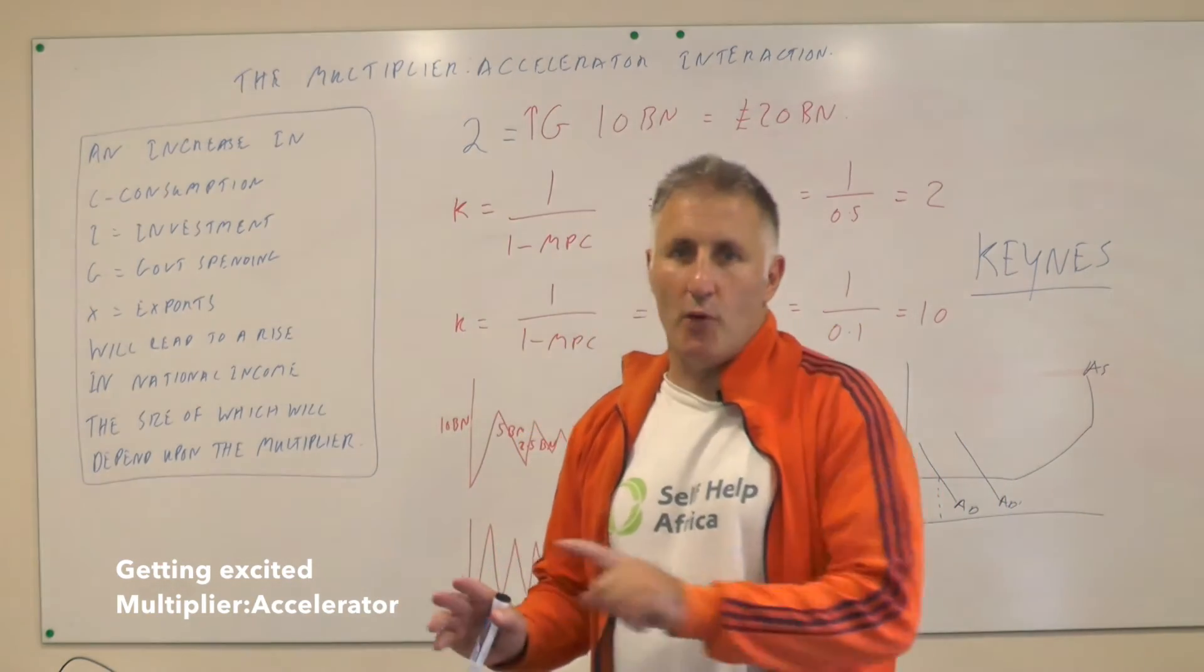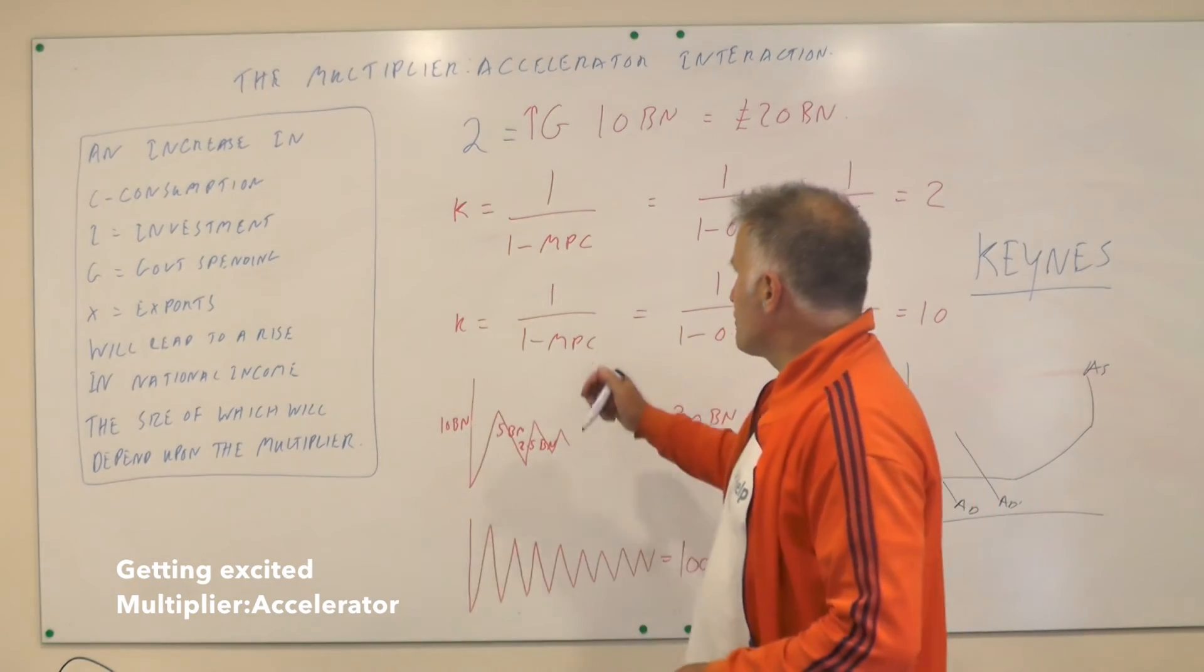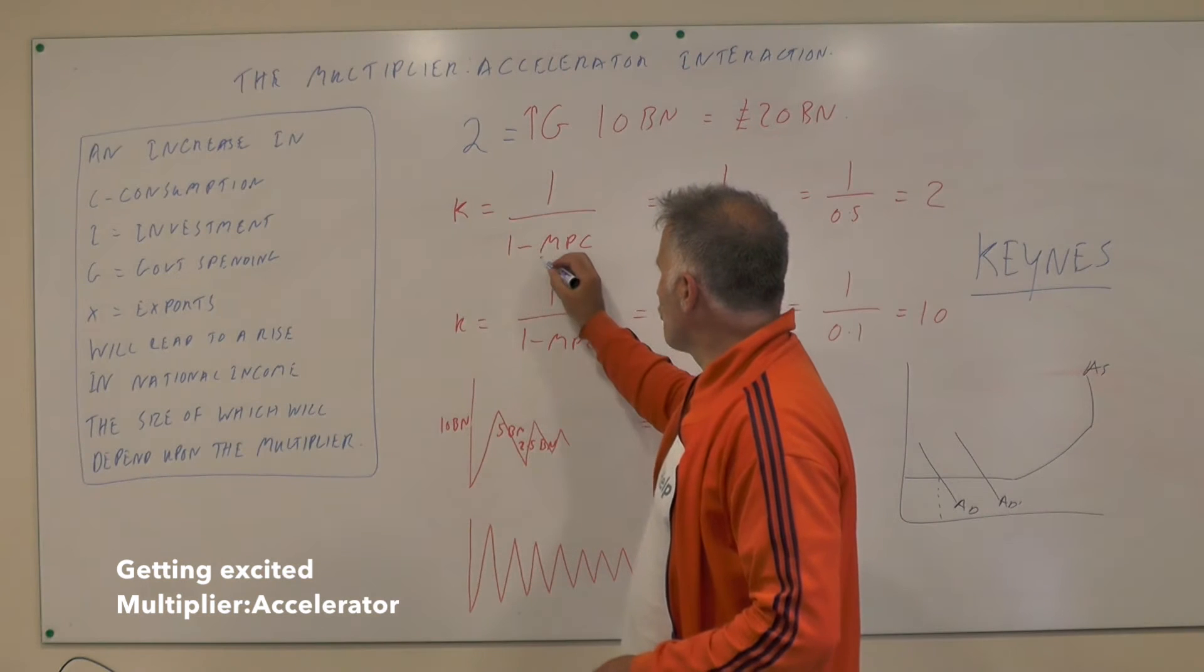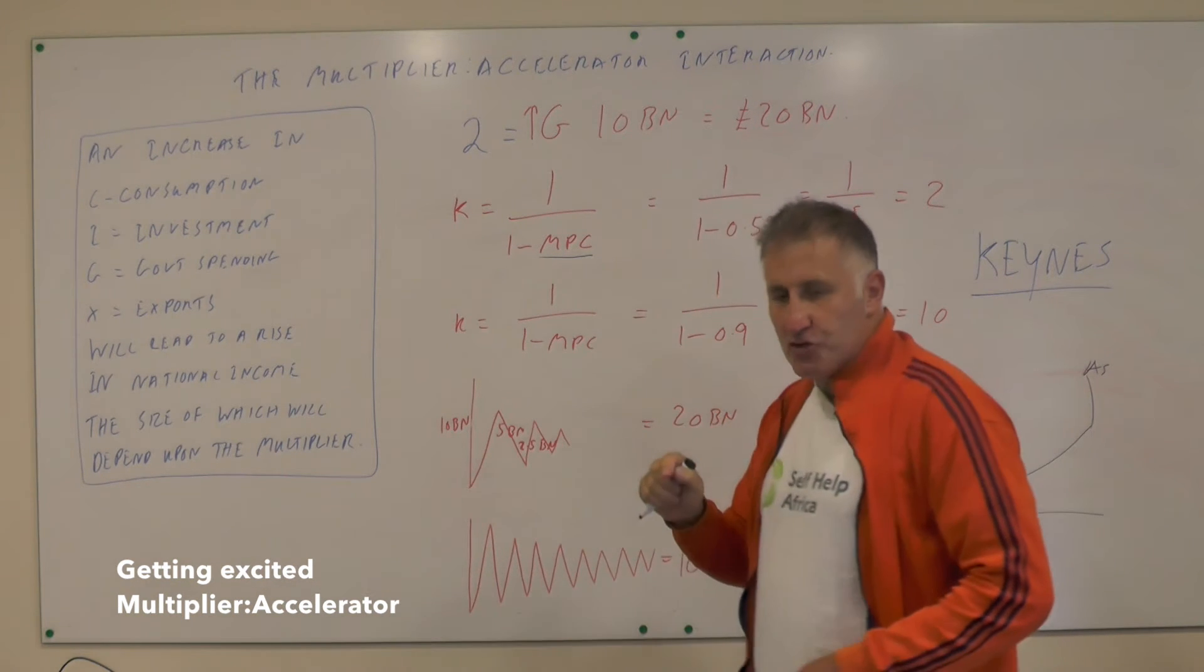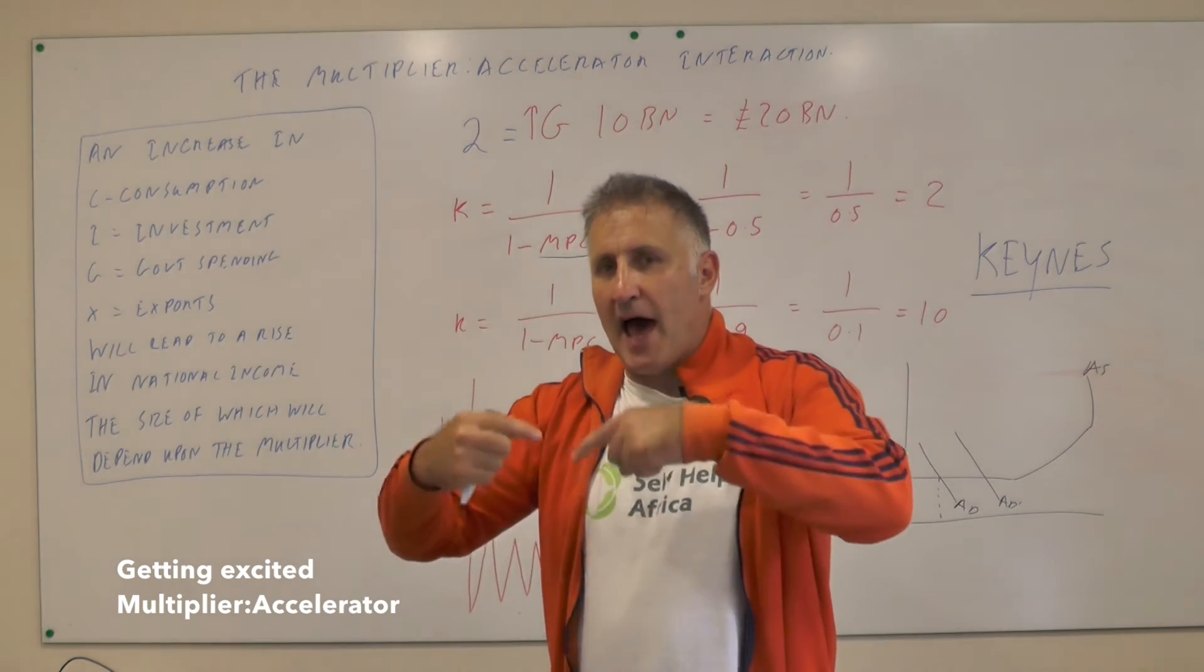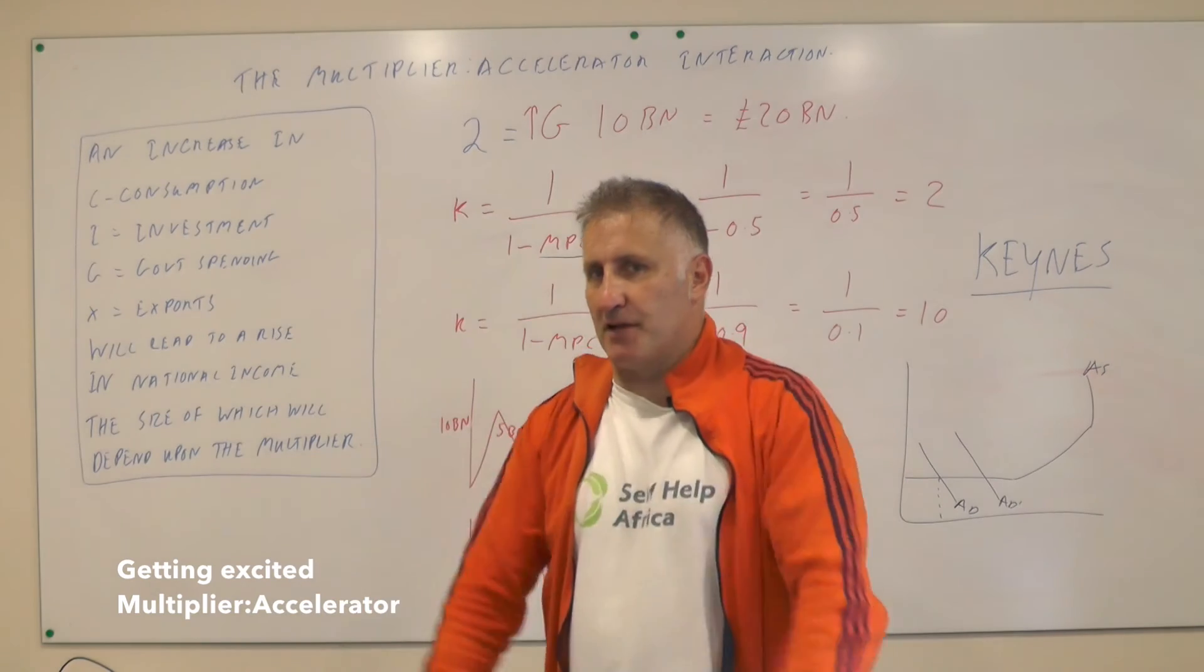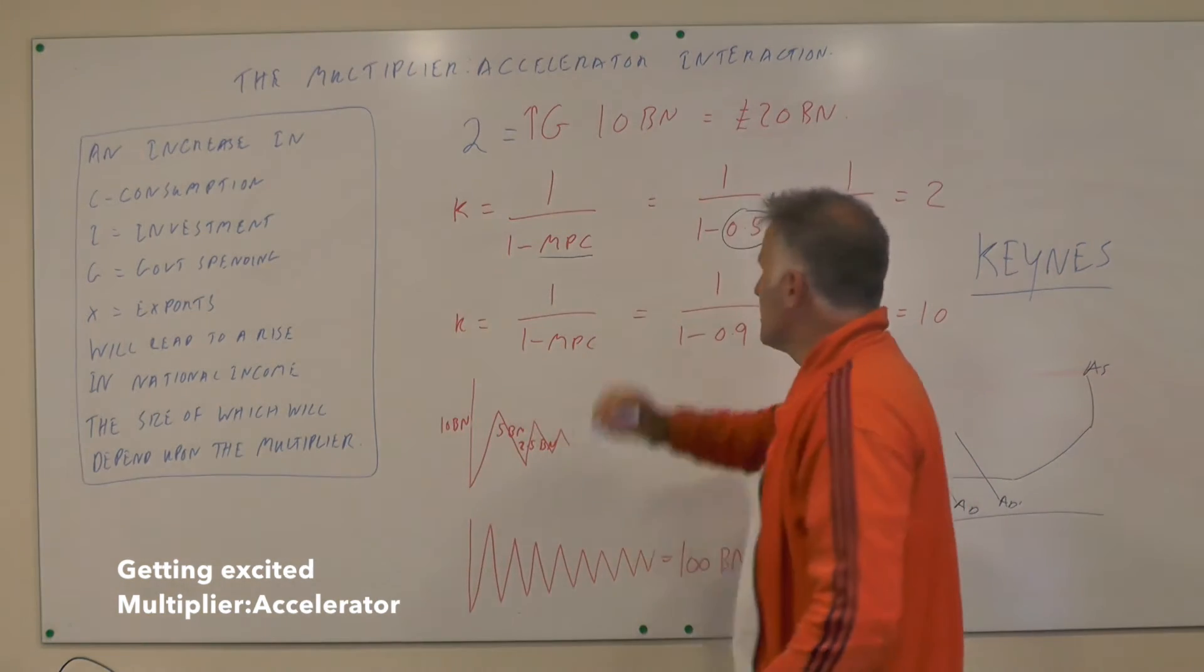If we're talking about a really simple economy with no imports and no taxes, then the following thing is going to occur. In this economy we have a thing called the marginal propensity to consume, and the marginal propensity to consume is if we give someone an extra hundred pounds, how much more money will they spend?